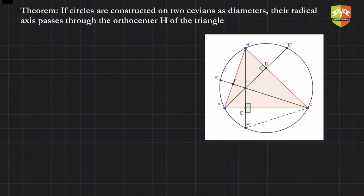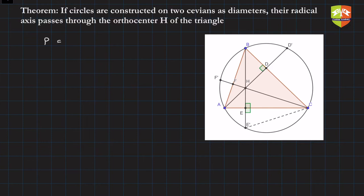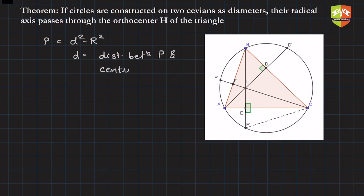There is also the concept of radical axis. Before getting into that, we discussed the power of a point with respect to a circle. Just to give a quick recap: the power of a point P inside or outside a circle is d² minus r², where d is the distance between point P and the center, and r is the radius of the circle.